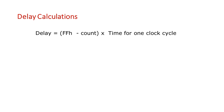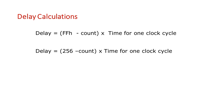Now let us look at the calculation of delay in Mode 2, meaning we want to find the count to load into the TH register. The delay formula is: Delay = (FFH − count) × time per clock cycle, in hex. In decimal, this is written as: Delay = (256 − count) × time per clock cycle.